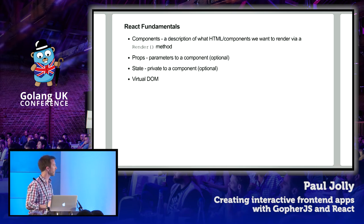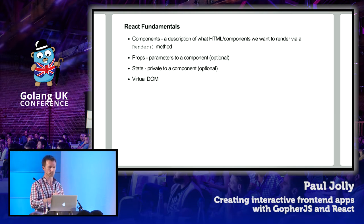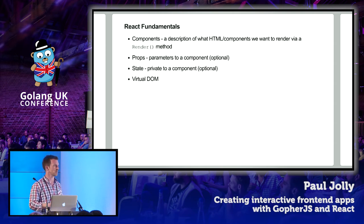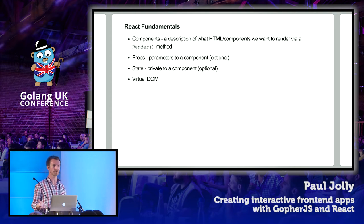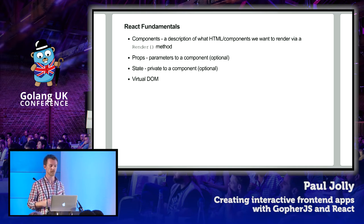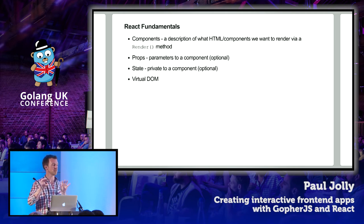Components are the fundamental building block of React. It's a description of what HTML or other components you want to render at any point, and we do that via the render method on a component. Props are effectively the parameters to that component — what arguments does this component need to work? State is optional and effectively private to a component. Updating the DOM can be costly, so React presents the concept of a virtual DOM, which is much cheaper to maintain. React builds up this shadow representation called the virtual DOM, then takes care of actually updating the real DOM so that we have rendered on screen what we ultimately want.